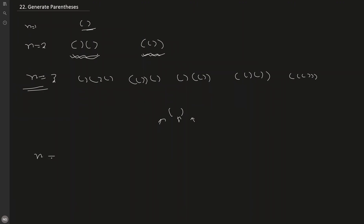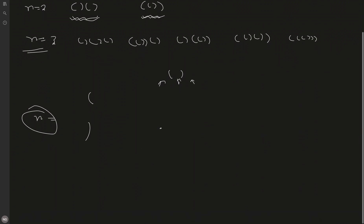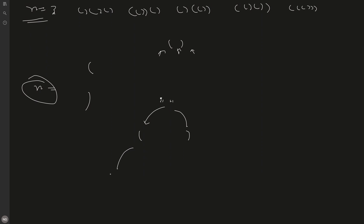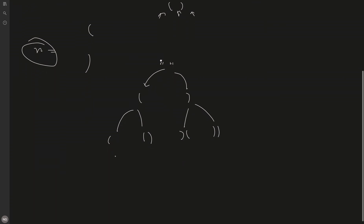If we have n pairs of parentheses, we will have n open parentheses and n close parentheses. Every time our open count is less than or equal to n and close count is less than or equal to n. We start from an empty string and at each step we have 2 choices: place an open parenthesis or place a close parenthesis. We keep doing this until both open and close reach n. Here we can branch to open-open, close-open, and close-close combinations.